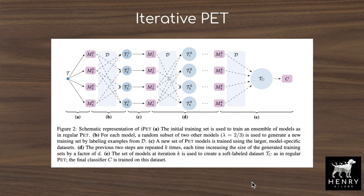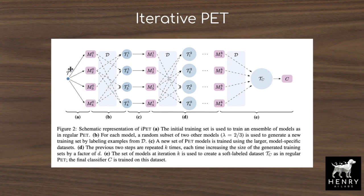They propose the iterative PET algorithm to better leverage multiple pattern-verbalizer pairs, since one pattern might need fine-tuning to steer it in the right direction. The idea: start with a small labeled dataset T and large unlabeled dataset D. Multiple models M1, M2, M3 are fine-tuned with different pattern-verbalizer pairs using cross-entropy loss on T. Then selectively mapping these patterns' predictions into a combination for the next dataset, minimizing disagreement, labels the unlabeled data D and gets a better cross-entropy estimate from the ensemble.